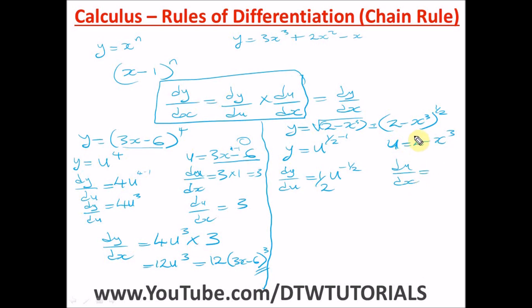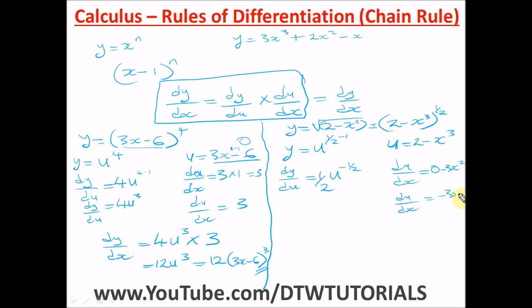Now find du/dx. The derivative of the constant 2 is zero. For −x³, bring down the power: −3x^(3−1) = −3x². So du/dx = −3x².